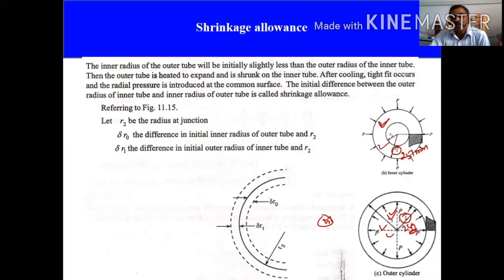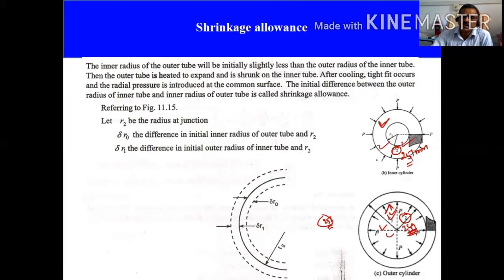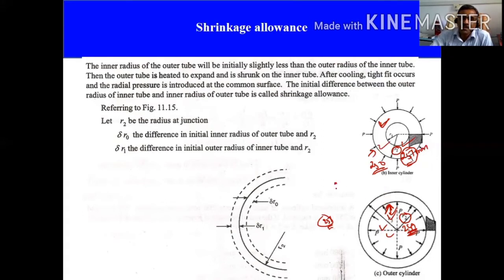After heating, the 249 mm diameter will expand to more than 251 mm, so now you can fit the cylinder inside. After cooling, the outer cylinder tries to return to 249 mm, but it cannot because the inner cylinder is already inside. As a compromise, the final common diameter becomes 250 mm.